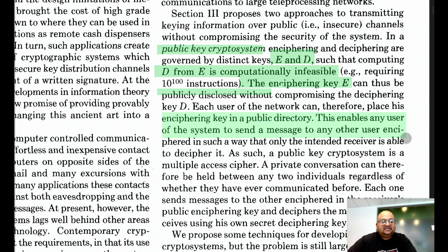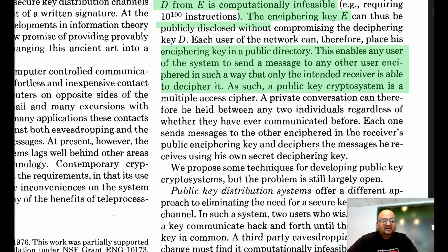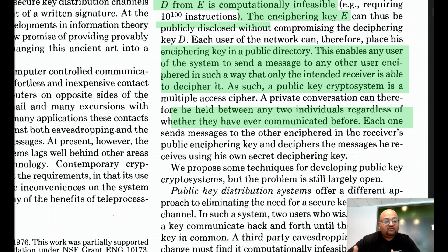What does this imply? This implies that if I know your public key, which is also your encrypting key, I can use that key to encrypt a message to you such that only you can decrypt that message with your decrypting key. This solves the problem of having to share a secret key beforehand, because anyone can look up anyone else's public key, whether you know them or not, and then establish a secure communication channel with that person.